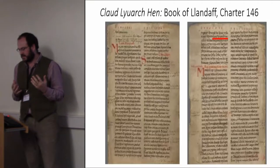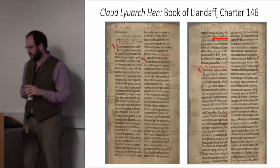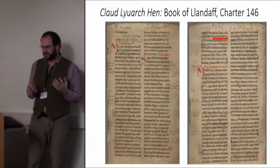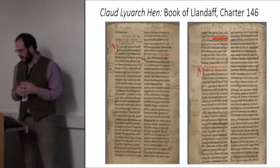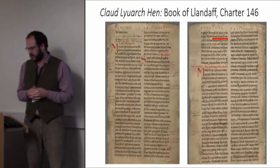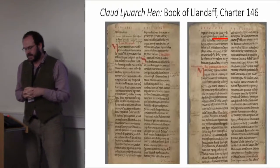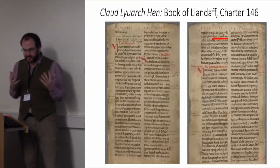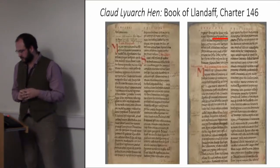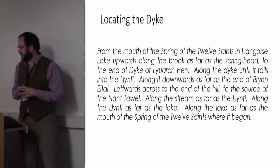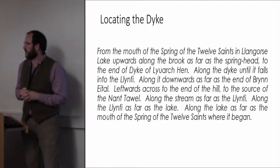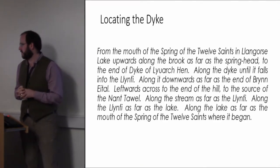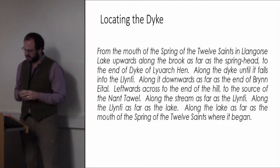The first question is: what and where is Lluwag Hen's Dyke? No feature of that name is recorded on the OS map or any other maps, and there's nothing on the HER which would fit that description. So if you want to find the dyke, we've got to start with the boundary clause: 'From the mouth of the spring of the 12 saints in Llangors Lake, upwards along the brook as far as the spring head to the end of the dike of Lluwag Hen, along the dike until it falls into the Llynfi.'